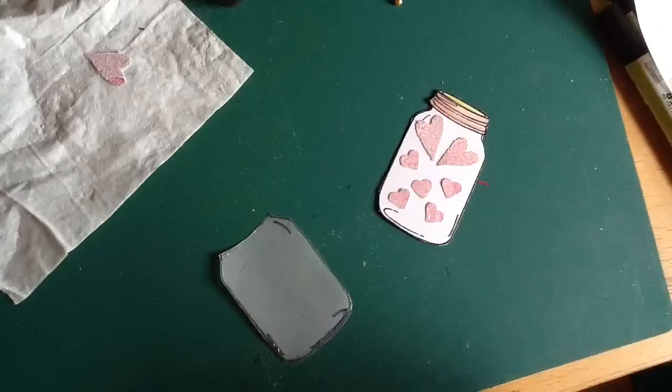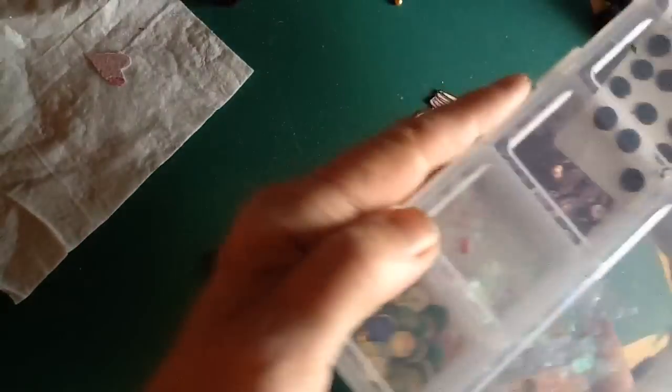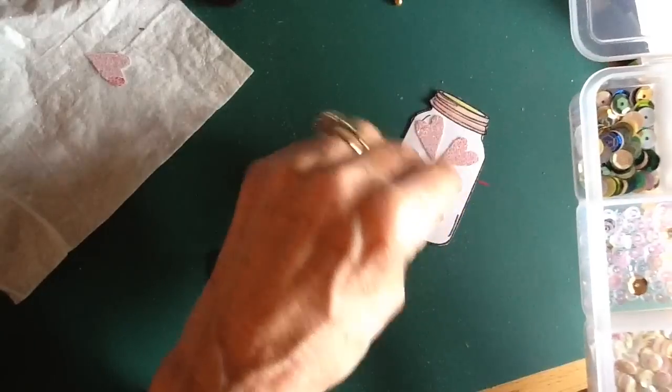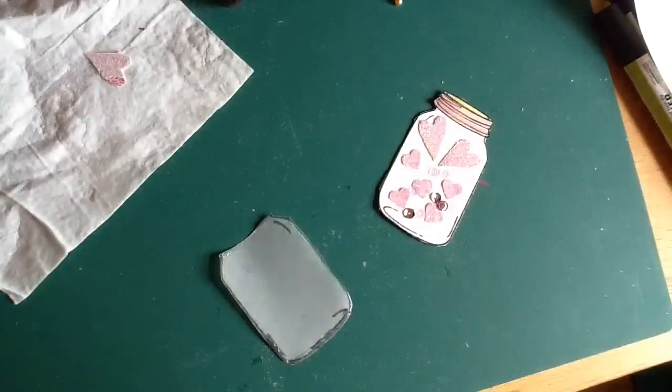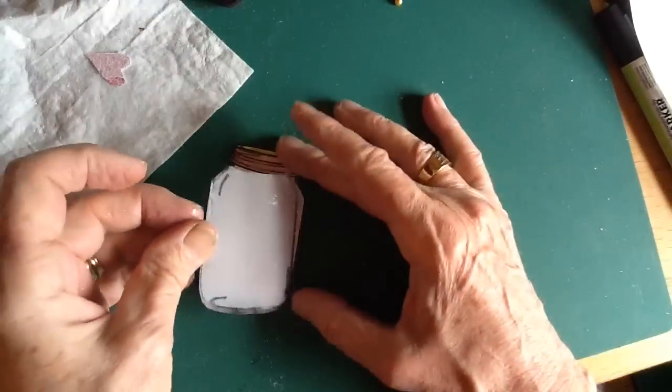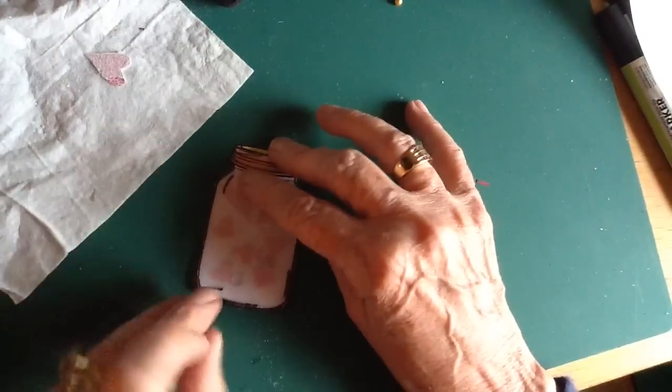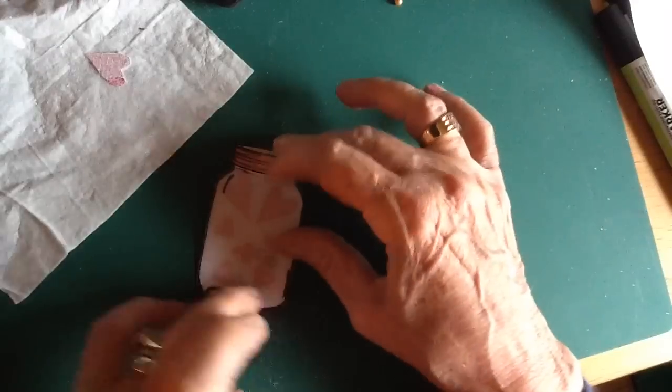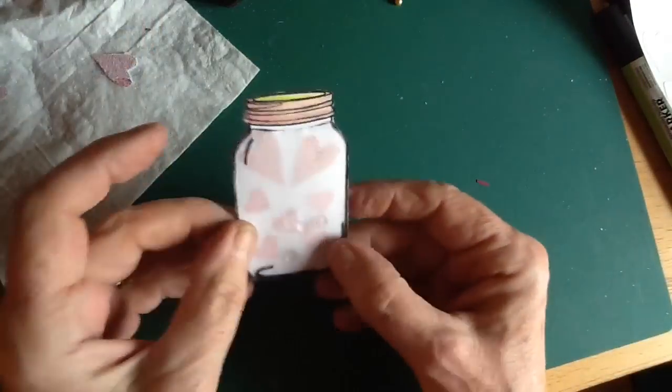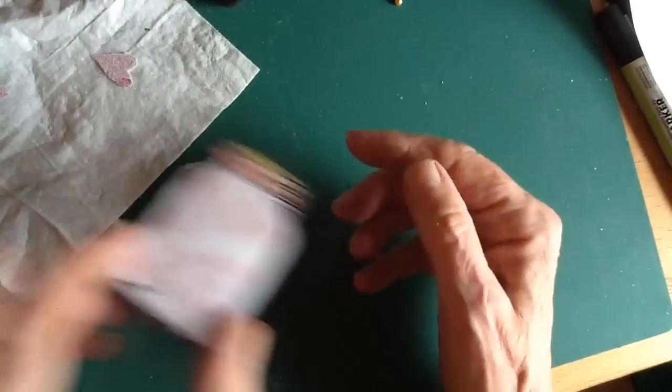Before I stick that down, I'm just going to take my little box of sequins and add a few clear sequins. I'm not sticking them down, I'm just throwing them on. And I've got some quite pretty pink ones, so I'll put a couple of those in as well. And then the vellum can be stuck on top and left to dry. The glossy accents doesn't take that long to dry. And because it's just stuck around the outside, the sequins do move.